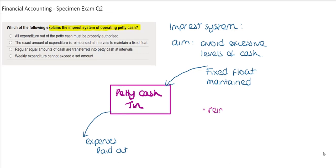So for example, if we had petty cash and we had an imprest system with a fixed float of, let's say, $200, and within the period...